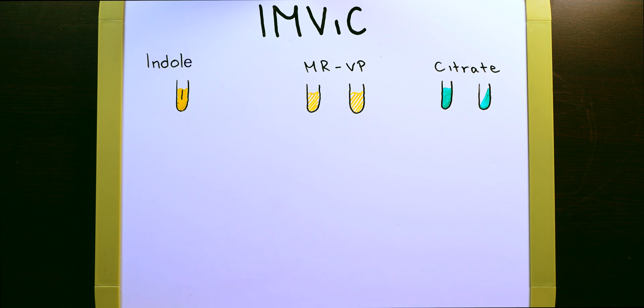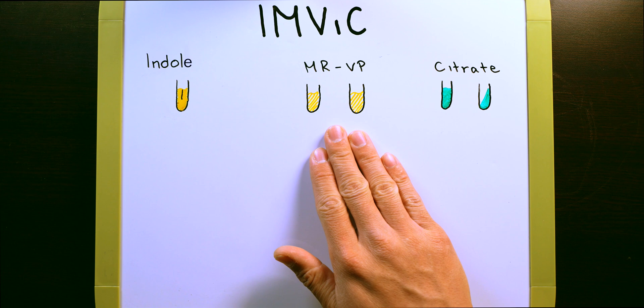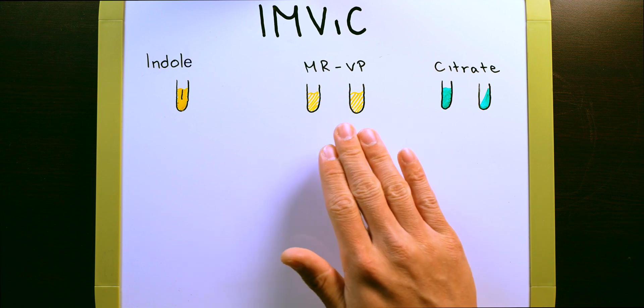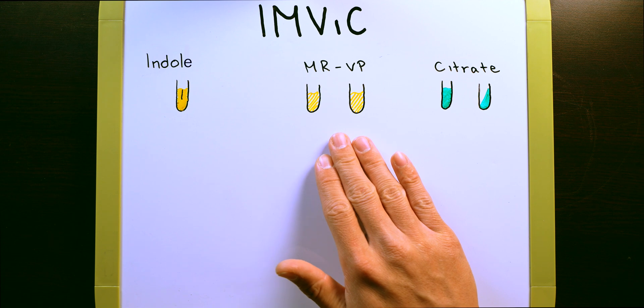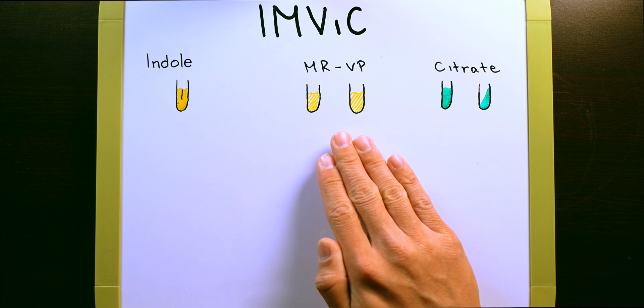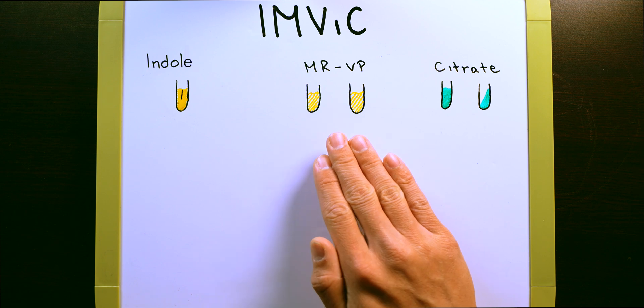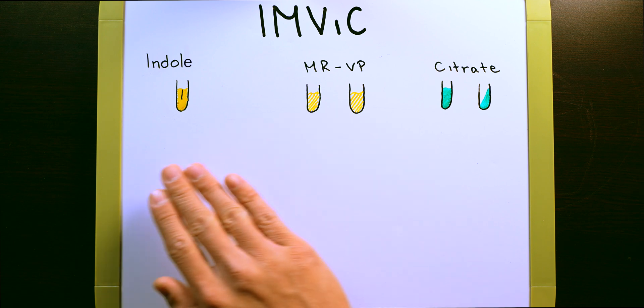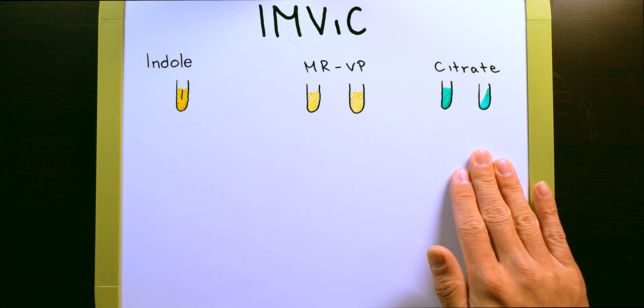And then once you've come back for the analysis, I would recommend that you start off by doing the MR-VP first, because this test, sometimes it's quick, as quick as 10 minutes. Other times it'll take forever, like an hour and a half. There's no way to really know. So it's best to do this one first, let the chemical reaction happen while you perform the rest of the indole and citrate tests and observations.